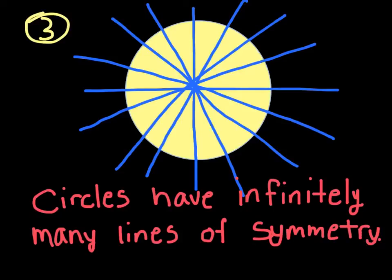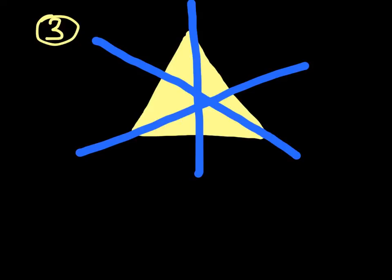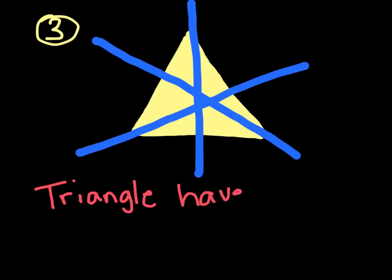Our last shape is going to be a triangle. This is our triangle, and our triangle has three lines of symmetry: one, two, and three. Those are the only lines of symmetry that the triangle has. So our rule for triangles is that triangles have three lines of symmetry.